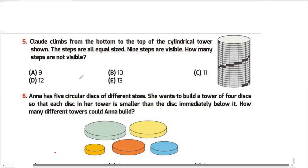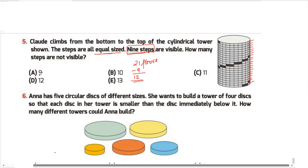Question 5: Claude climbs from the bottom to the top of a cylindrical tower. The steps are all equal-sized and 9 steps are visible. How many steps are not visible? Counting the floors of the tower, there are 21 floors total, meaning 21 steps. Since 9 are visible, the number not visible is 21 minus 9, which equals 12. My answer is 12.